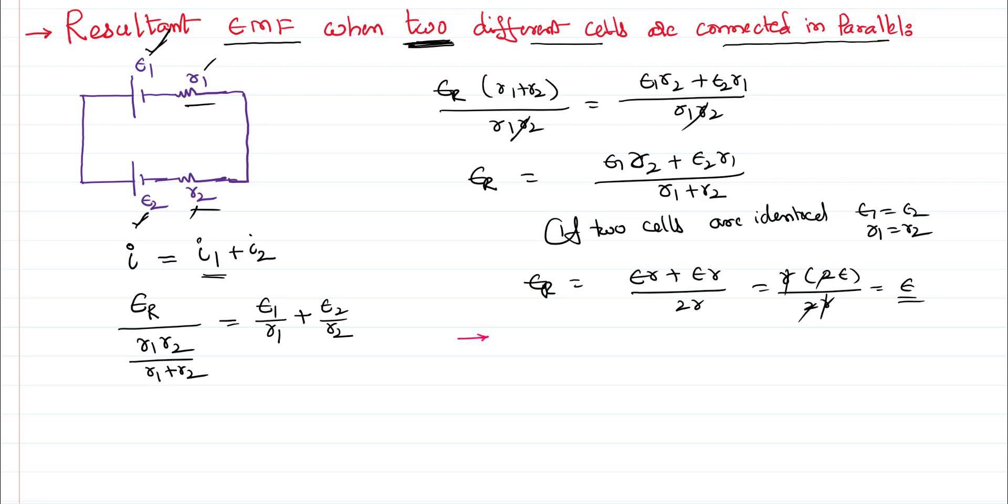Before we go, let me just conclude one more thing. What if these two cells are connected in reverse like this? So e1, r1, e2, r2, everything is the same, but here the polarities are reversed, so the currents will be traveling in the opposite direction. I won't be writing i equals i1 plus i2, rather I will be writing i1 minus i2. In that case, the resultant will be in the place of plus, I will be getting a minus: e1 r2 minus e2 r1 by r1 plus r2. This resistance will always be added up, there is no negative there.